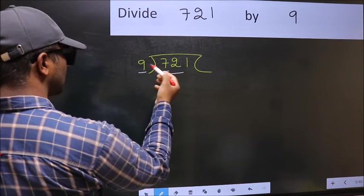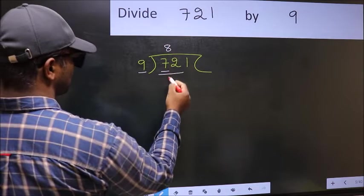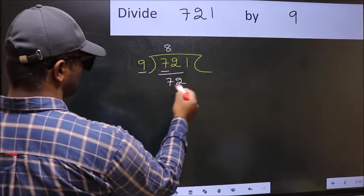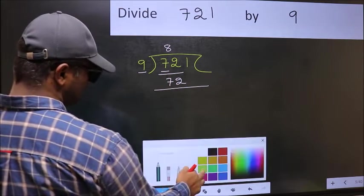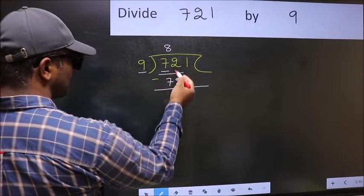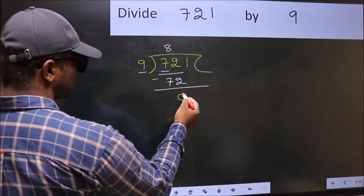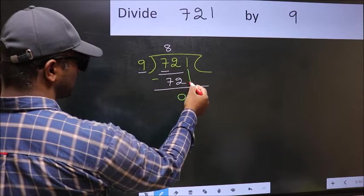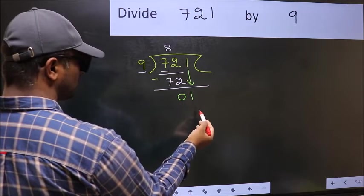When do we get 72 in 9 table? 9 times 8 is 72. Now we should subtract. 72 minus 72 is 0. After this, bring down the beside number. So 1 down.